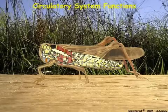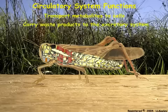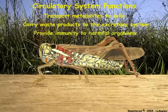The roles of the circulatory system are to transport essential metabolites from the fat body to the cells, carry waste to the excretory system, and provide immunity to harmful organisms.